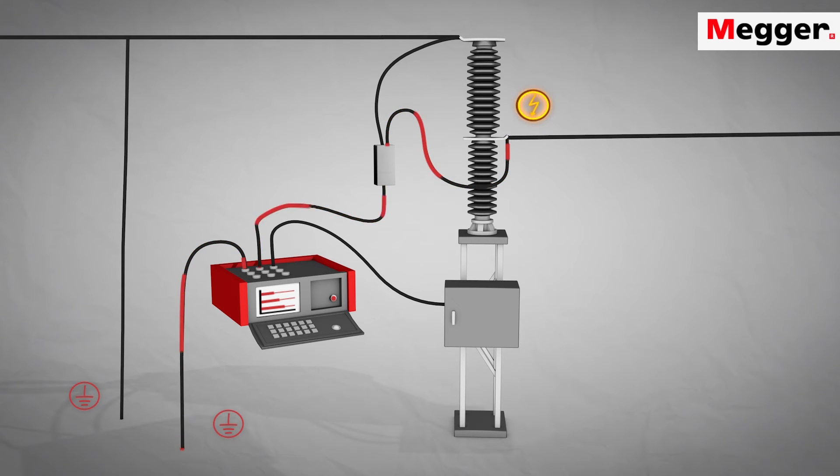When the measurements are done, the ground cable has to be attached again before the measurement cables can be removed. With Megger's dual ground method, the circuit breaker can be timed without removing the ground.